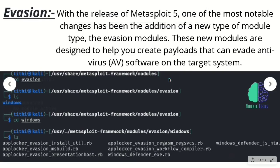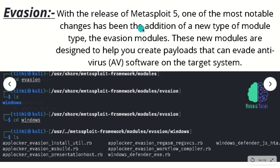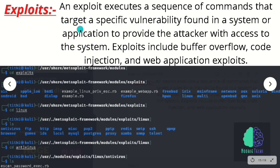Next comes the evasion module, which is a very new module. We often find that antivirus software detects our MSF Venom payloads, so the evasion module can bypass many famous antivirus programs and Windows Defender by generating evasive payloads without installing external tools. Then comes the exploits module. This module uses a payload to perform the execution of a sequence of commands targeting a specific vulnerability found in a system to provide the attacker with access. Metasploit Pro even has automated exploits.